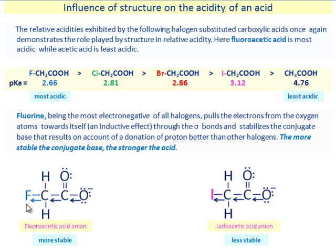Fluorine, being the most electronegative of all halogens, pulls the electrons from the oxygen atoms towards itself through inductive effect through the sigma bonds and stabilizes the conjugate base that results from donation of a proton better than other halogens. The more stable the conjugate base, the stronger the acid.